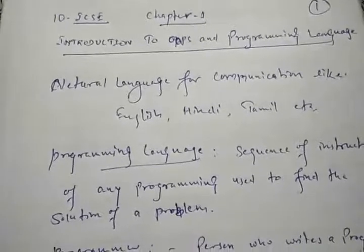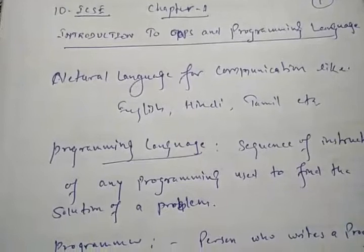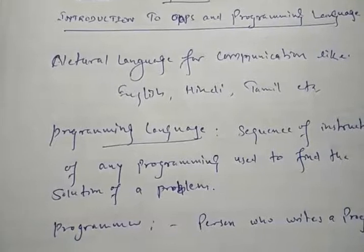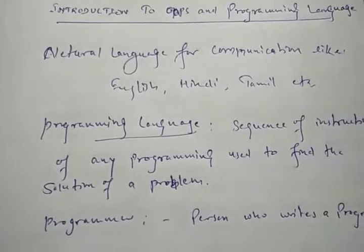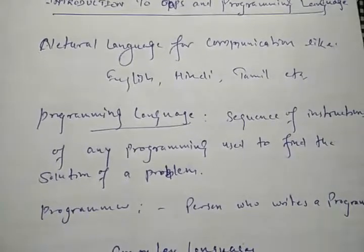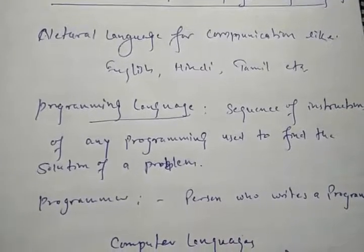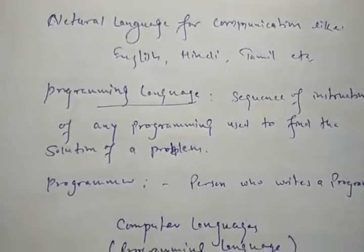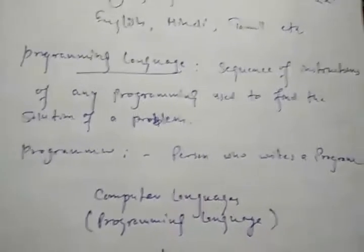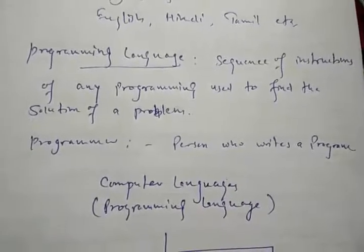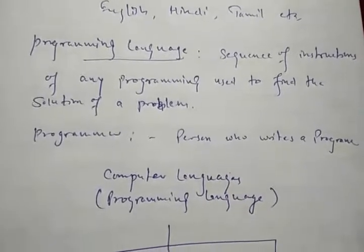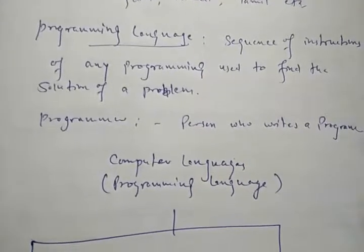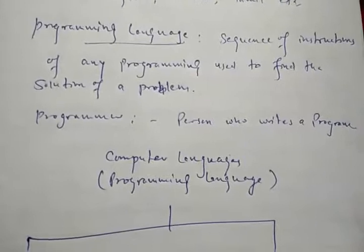Good morning students. Today I am explaining chapter 1: Introduction to OOP concepts and programming language. First, understand what is a language. Language is a mode of communication. There are some examples of natural language that we use in real life, such as Hindi, English, Tamil, Malayalam, etc. But here we are talking about programming language. Programming language is the sequence of instructions used to find the solution of a problem. The person who writes the code in a programming language is called a programmer.